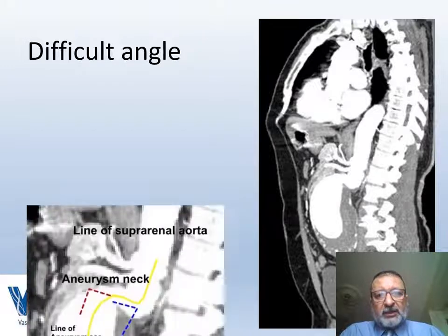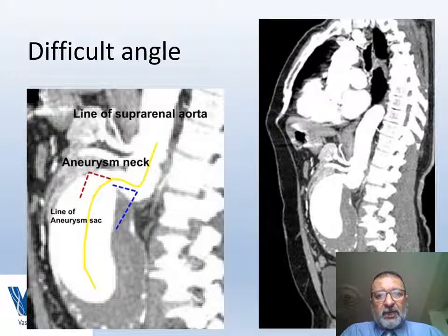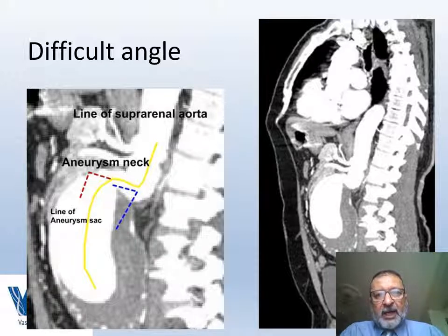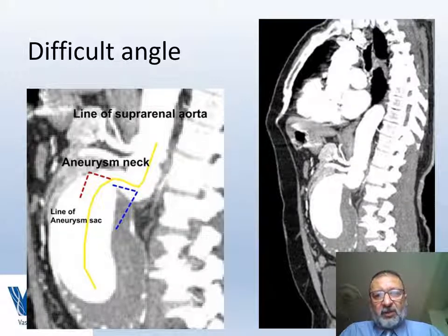The patient is an 85-year-old gentleman who presented with a nine-centimeter aortic aneurysm. As you can see, he has a double 90-degree angle: 90 degrees between the aortic axis and the neck axis, and another 90 degrees between the neck axis and the sac axis. He was not fit to have open surgical repair.